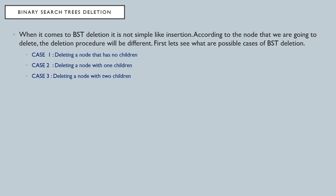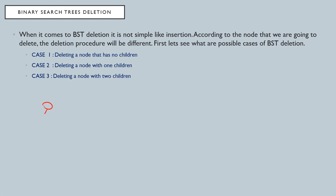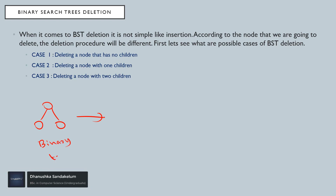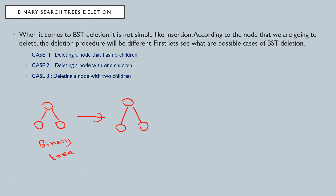Let's look at binary search tree deletion. A binary tree means a node can have at most two children. In a binary search tree, if the values are x, y, z, then x is less than y and z is greater than y. We've already learned how binary search tree insertion works.